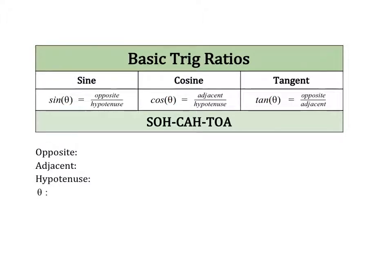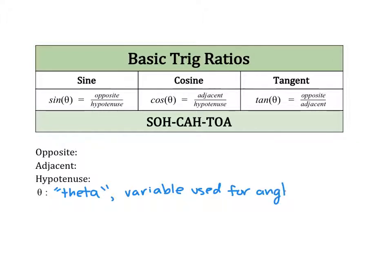The symbol theta is read as theta. Theta is just a Greek letter — it's just like using X, Y, or Z. It's a variable, and this is the variable that we always use for angles. When we're working in trigonometry, the most common variable that represents an angle is going to be theta.